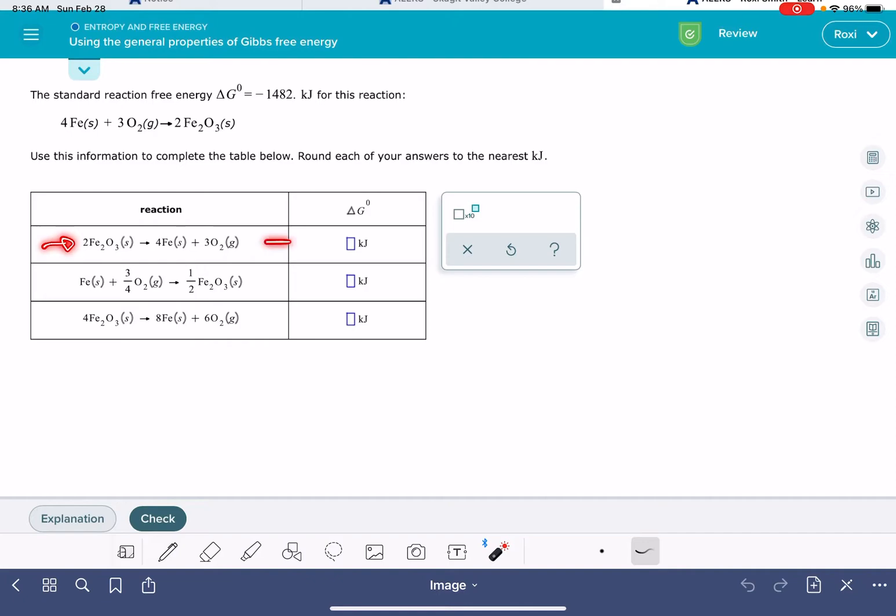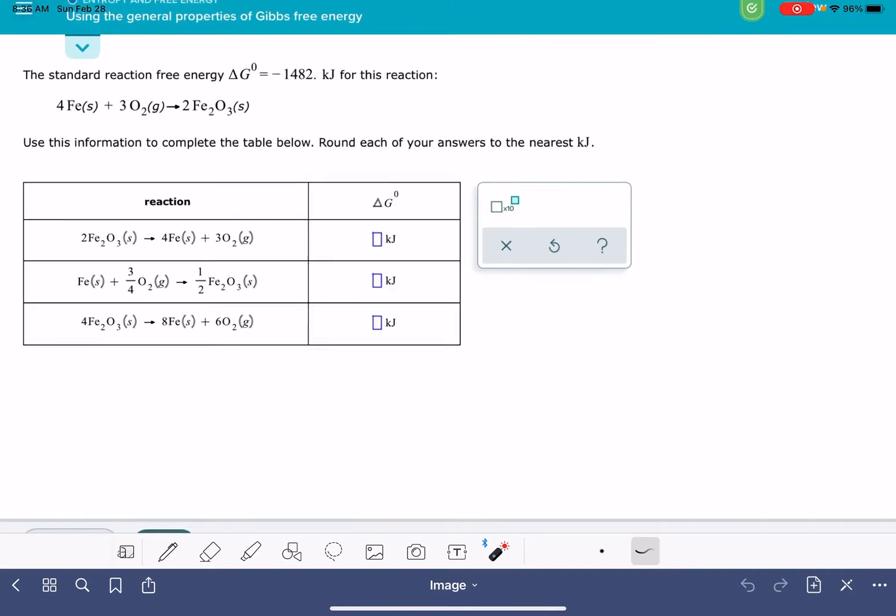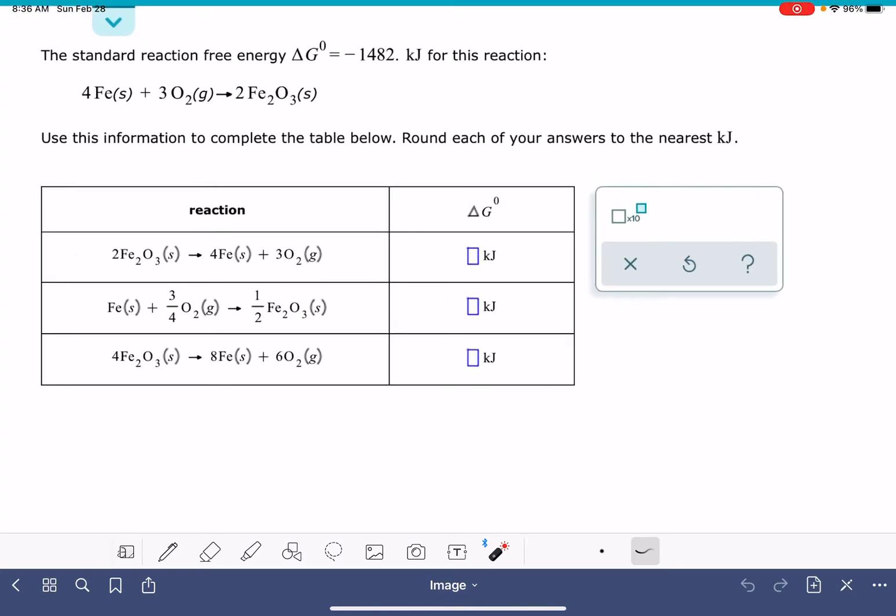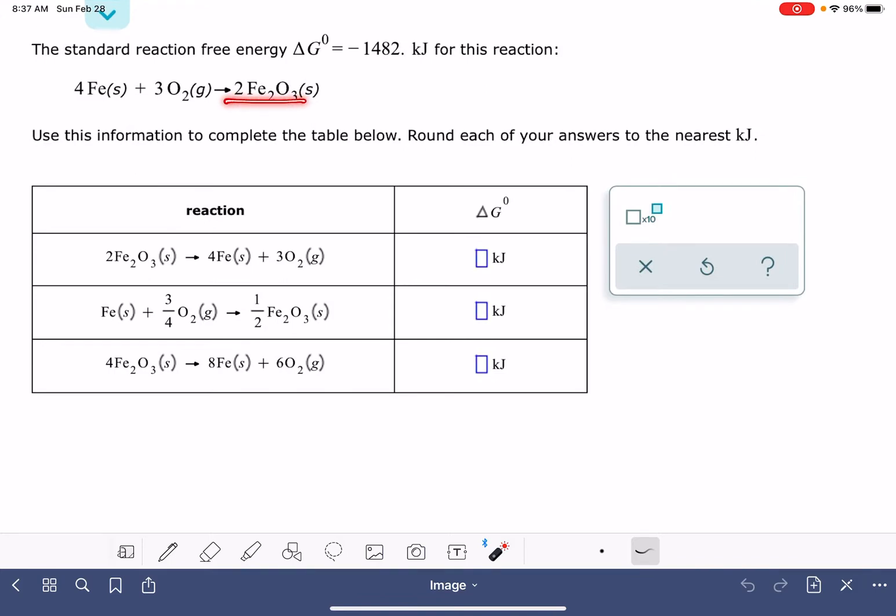In this first one that we're being asked about, it looks like all that has happened here is the chemical reaction has been turned around. So we have 2Fe2O3 on the left side instead of the right, and our reactants on the right side instead of on the left.